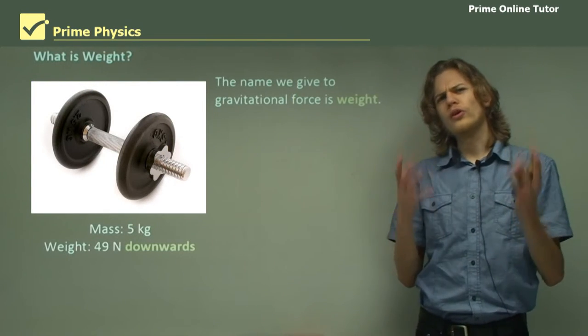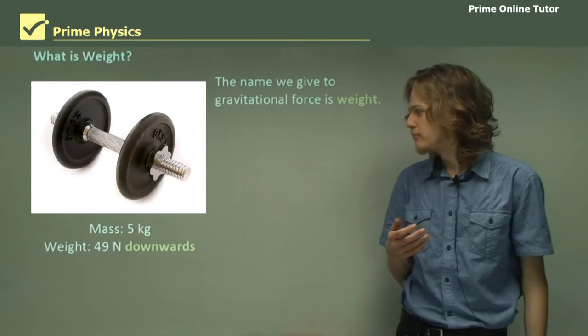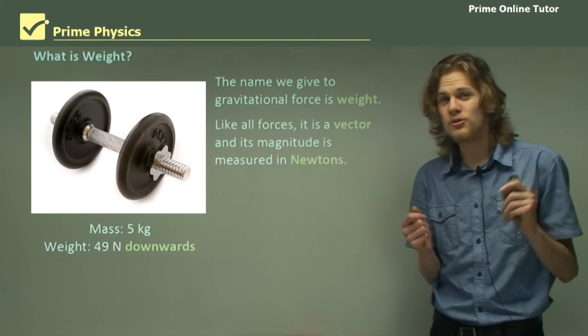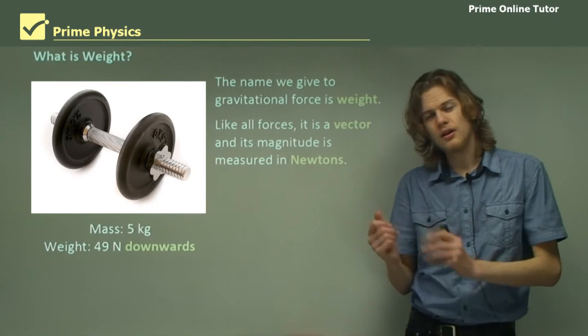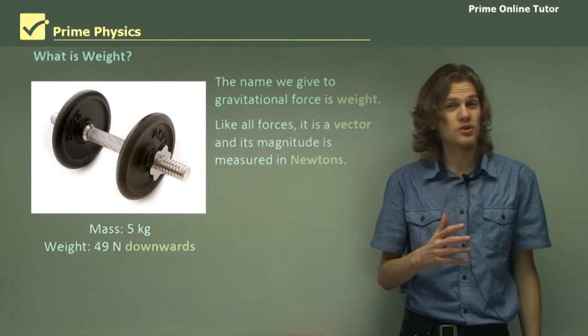So first what is weight? Well the weight is what we call the force due to gravity. Like all forces it's a vector not a scalar. Mass is a scalar because it doesn't have a direction but force is always a vector so it always has to point in a particular direction.